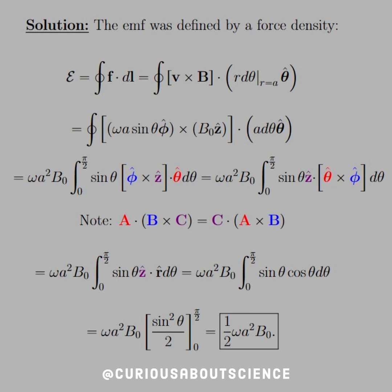We see that omega A squared B naught is all constant, so they go out the integral. Since we're looking for the northern hemisphere, or the north pole to the equator, we're going from 0 to pi over 2, as our angle would suggest.